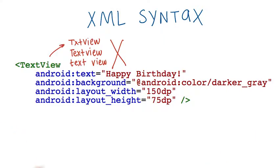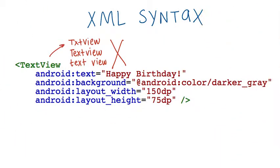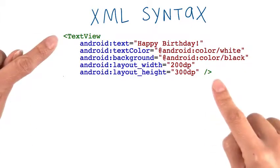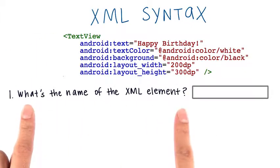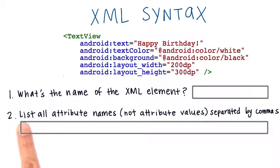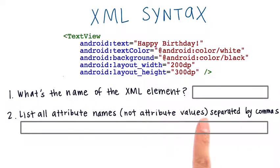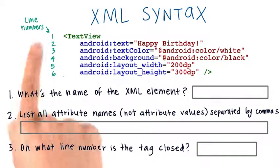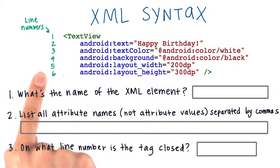One more time so you don't forget — it's ding, whoosh, pew, pew, pew, pew, boom. Now that we've gone over the syntax rules of XML, can you answer these questions for this XML element? First, what is the name of this XML element? Then, can you list all the attribute names separated by commas, not the attribute values? Then, on what line number is the tag closed? I've written the line numbers on the left-hand side. Let's get started.